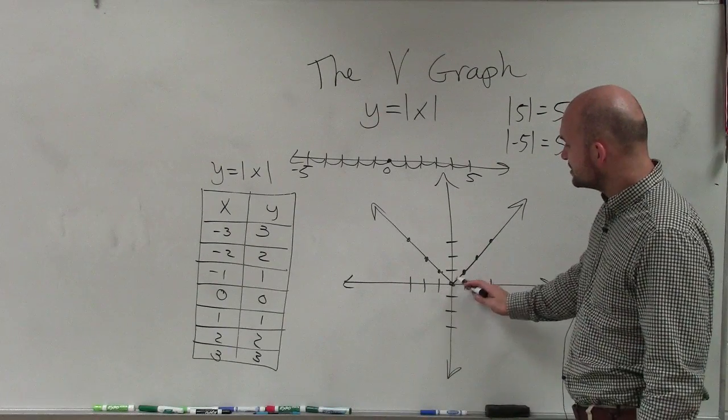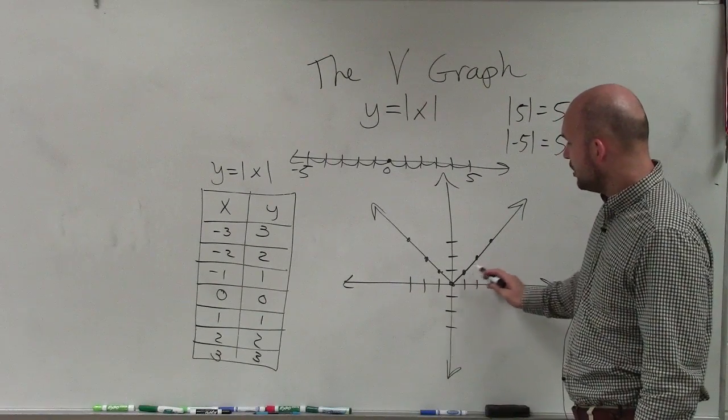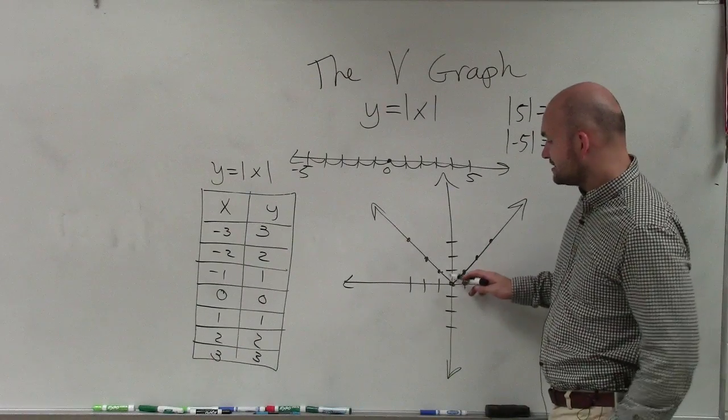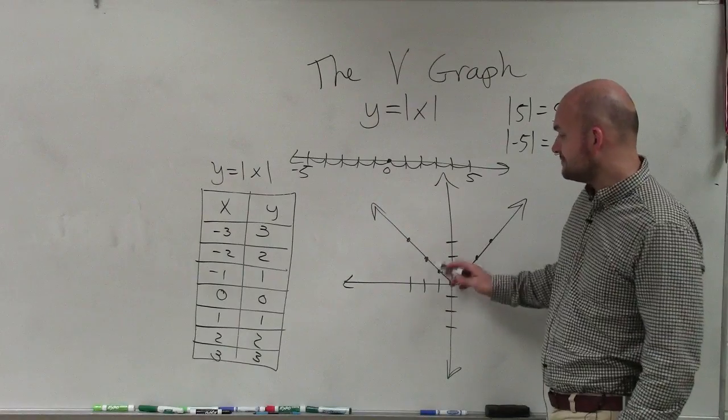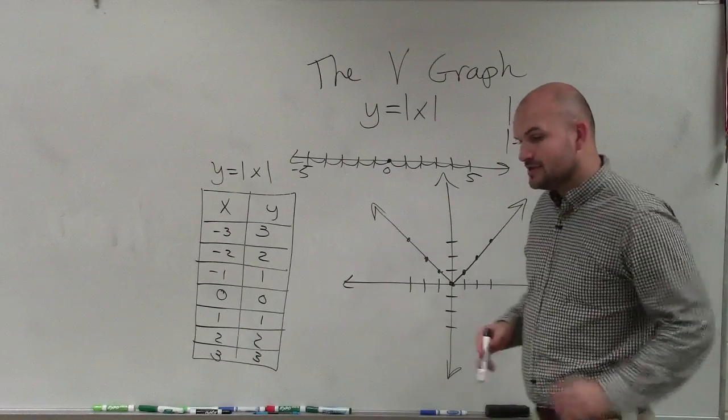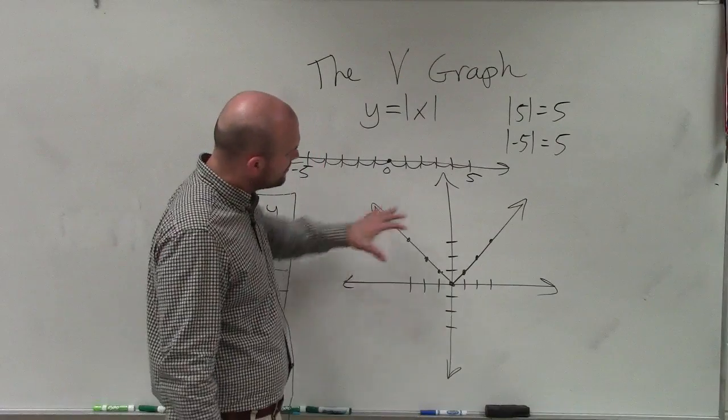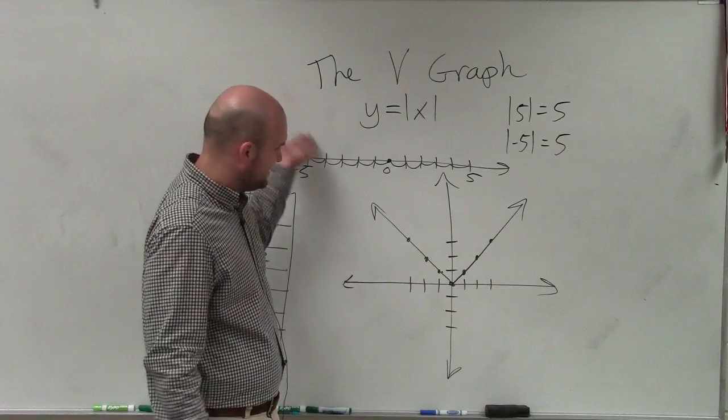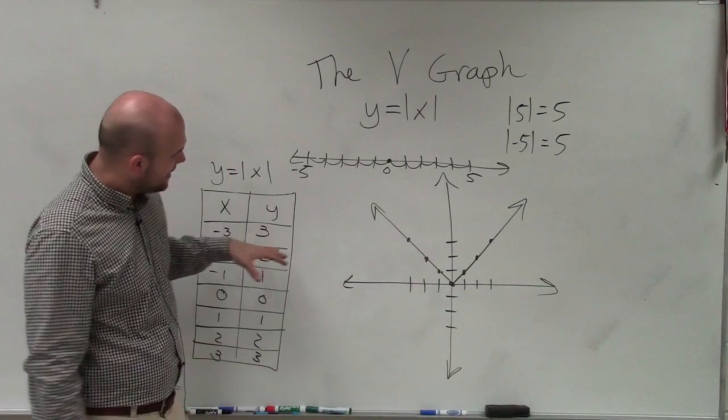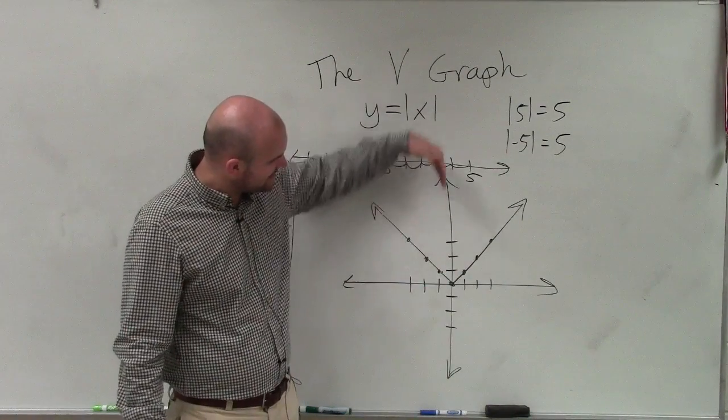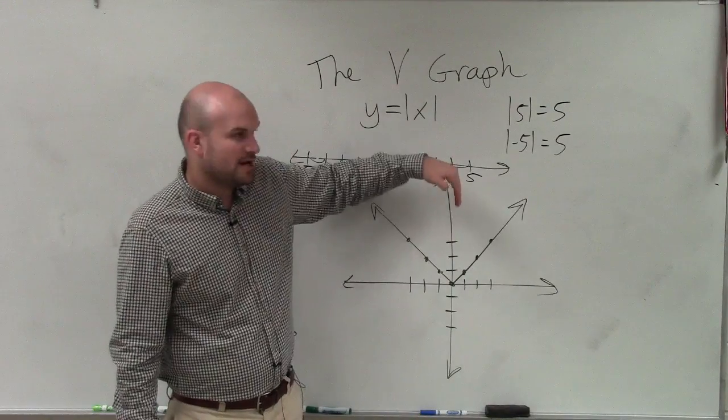And then also notice that the slope of this is 1 over 1. It goes up 1 over 1, up 1 over 1. Where here is a negative slope: up 1 to the left, up 1 to the left, up 1 to the left. So those are some very important things that we need to discuss when looking at the parent graph. It opens up, it's going to extend indefinitely, and it has the same slope going both directions. So it has an axis of symmetry about our y-axis.